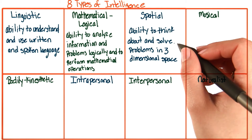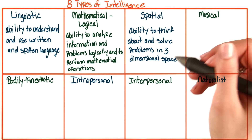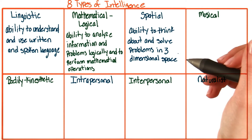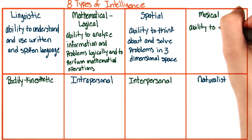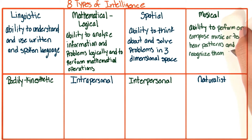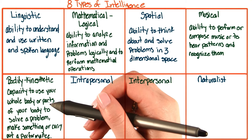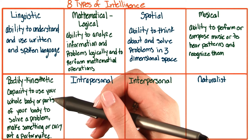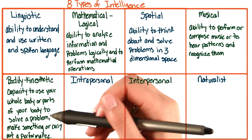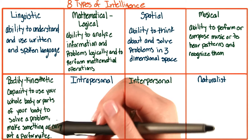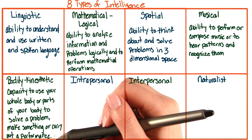For our spatial intelligence, this involves the ability to solve problems in three-dimensional space. Next, our musical intelligence involves the ability to perform or compose music, or to hear patterns and recognize them. Bodily-kinesthetic intelligence involves the capacity to use your whole body or parts of your body to solve problems, make something, or carry out a performance.